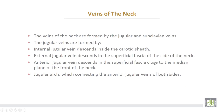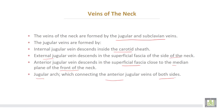The veins of the neck are formed by jugular and subclavian veins. The jugular veins are: number one, the internal jugular vein, which runs inside the carotid sheath; number two, the external jugular vein, which runs in the superficial fascia of the side of the neck; and the anterior jugular vein, which runs in the superficial fascia close to the median plane of the front of the neck. Then there is the jugular arch, connecting the anterior jugular veins of both sides.